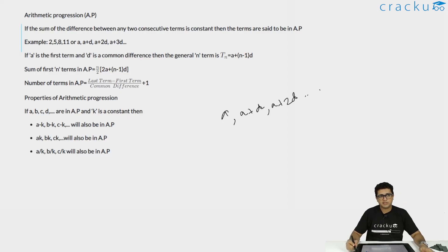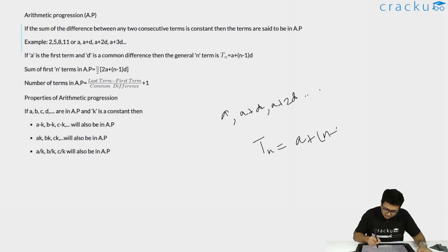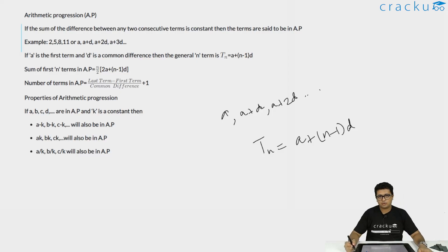This makes for a lot of interesting questions that usually come in the CAT exam. The nth term of an arithmetic progression is represented as T(n), written as a plus (n minus 1)d. The common difference between the nth term and the (n+1)th term is d, and a is the first term of the arithmetic progression.